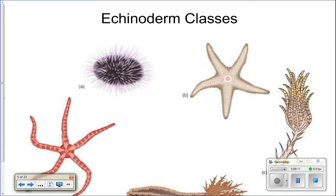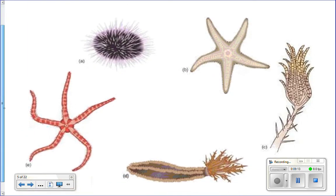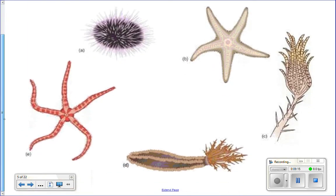This picture represents the echinoderm classes — there are five classes. You've got Ophiuroidea, which includes things like your brittle stars; Echinoidea, which are your sea urchins; and asteroids.